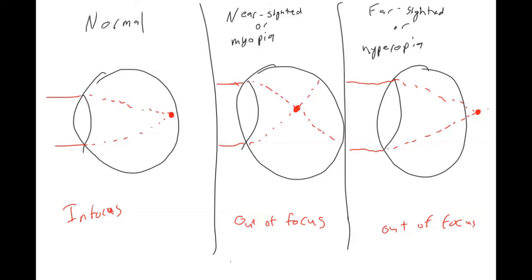Normally, you should be able to see both far and near. If you're nearsighted, you can only see things close to you and farther away things are blurry. And then farsighted people can see far away things, but they can't see things close to their face.